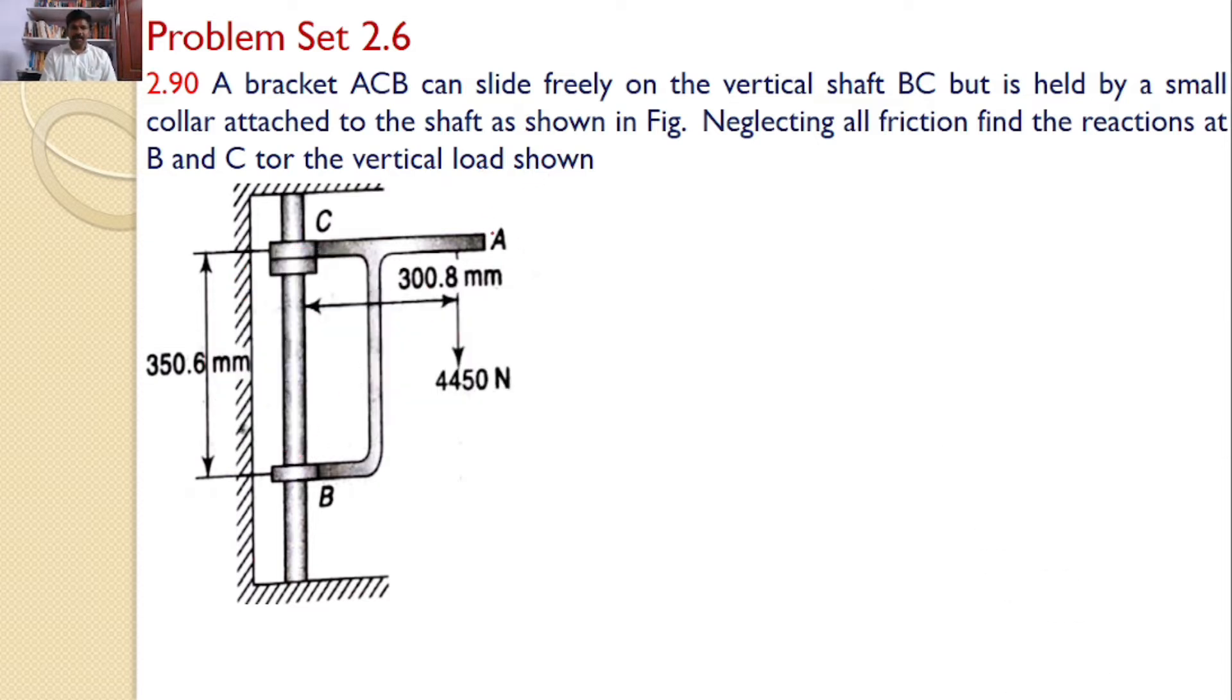That means there is a bracket ACB which can slide freely in the vertical direction. That means no vertical reaction, only horizontal reactions will develop at B and C. But a collar is attached at C so that the movement is also arrested in vertical direction at C.